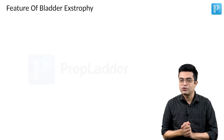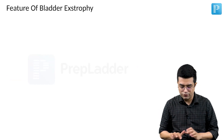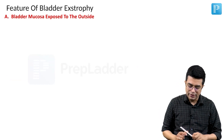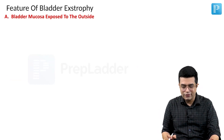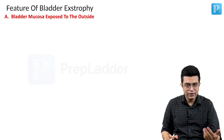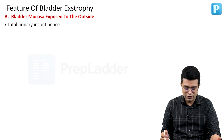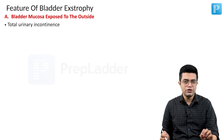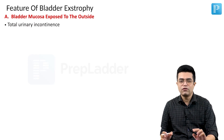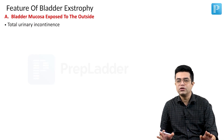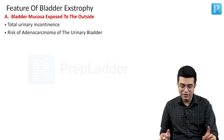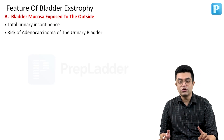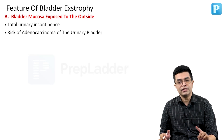What are the features of bladder exstrophy that you need to know? First, the bladder mucosa will be exposed to the outside. This will result in two things: first, there will be total urinary incontinence, so there will be no urinary control in these patients. And secondly, there will be a risk of adenocarcinoma of the urinary bladder in later life.